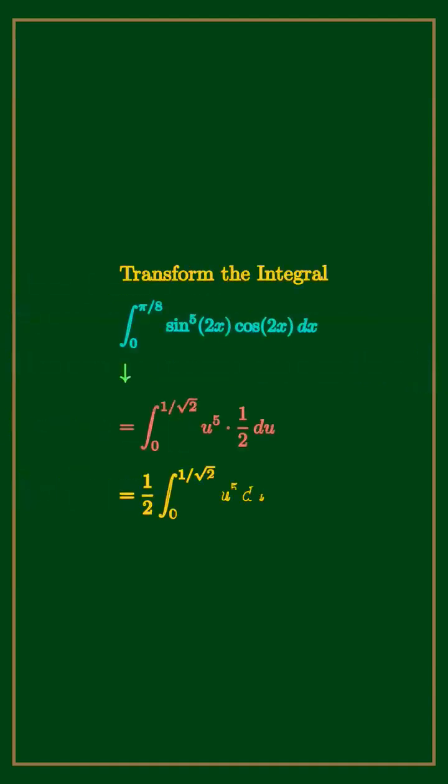The integral transforms to 1 half times the integral from 0 to 1 over square root 2 of u to the 5th power du.